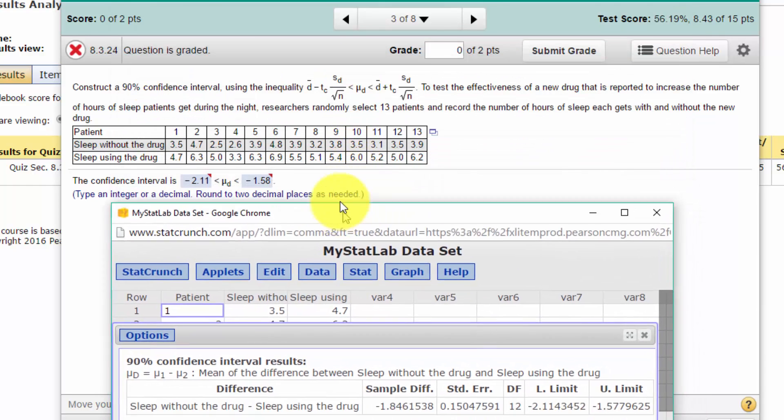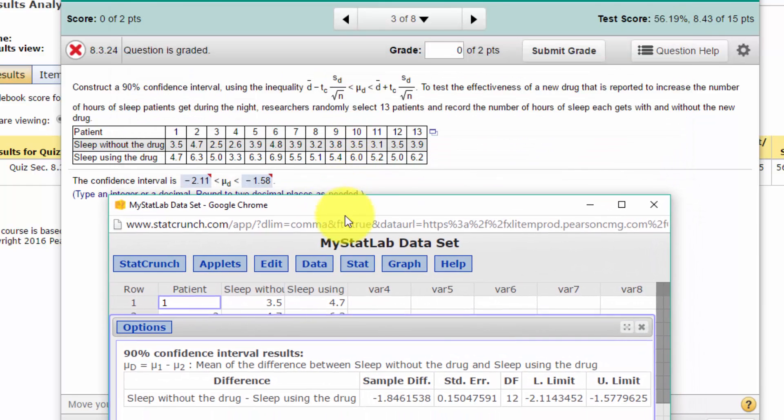Yes, that's the answer in MyStatLab: -2.11 mean difference to the upper limit of -1.58. So it's really fast.